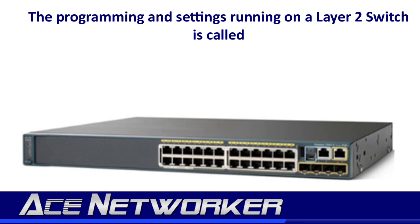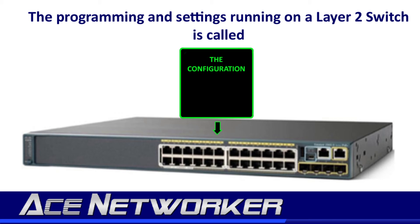The settings on a switch or router that dictate how it operates — what interfaces are up or down, what VLAN each interface is expected to pass traffic in, spanning tree settings, and every other setting — are known as the configuration. There are several configurations and copies of configurations that you need to know about on a Layer 2 switch or router, and you need to know the dynamic of how they function overall.